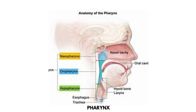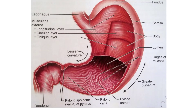The pharynx is different from the larynx — the larynx is the voice box, while the pharynx is the part of the alimentary canal through which food passes. When food passes through the trachea instead, it causes a coughing sensation. This is why people are advised not to talk or make noise while eating, so food takes the correct path through the pharynx and not the trachea.